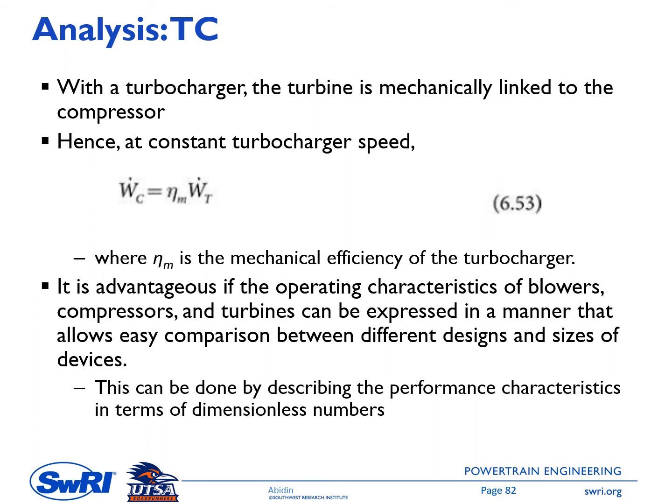Now we look at the analysis of the turbocharger as a whole. With a turbocharger, the turbine is mechanically linked to the compressor, so there will be losses when energy is transferred from the turbine to the compressor. This loss is represented by mechanical efficiency as shown in equation 6.53. Using dimensionless parameters from dimensional analysis allows comparison between different turbocharger sizes.